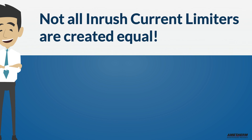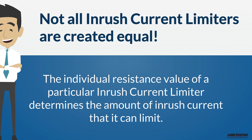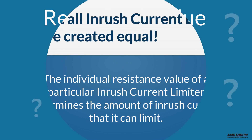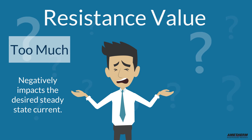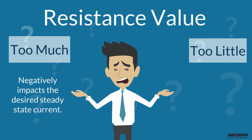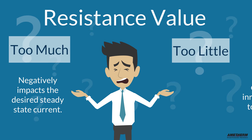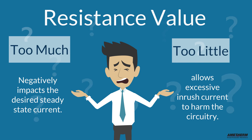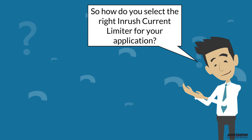Not all inrush current limiters are created equal. The individual resistance value of a particular inrush current limiter determines the amount of inrush current that it can limit, as well as the amount of steady state current that is allowed to pass through. Too much resistance can negatively impact the desired amount of steady state current, yet not enough resistance can allow excessive inrush current to harm the very circuitry that you are trying to protect.